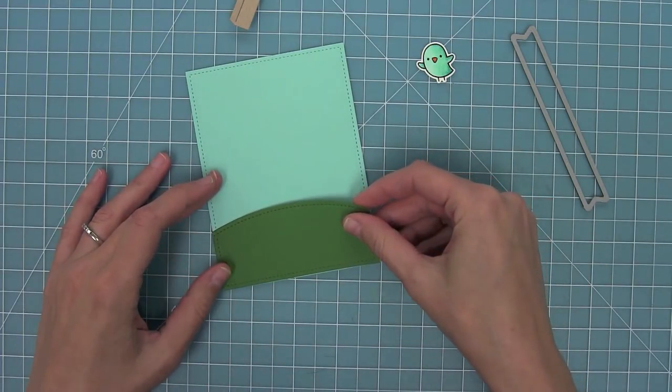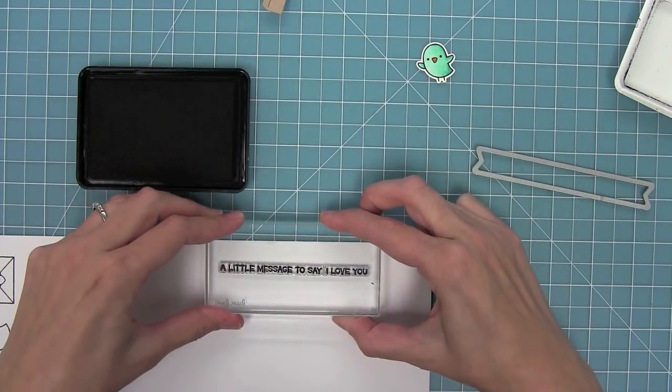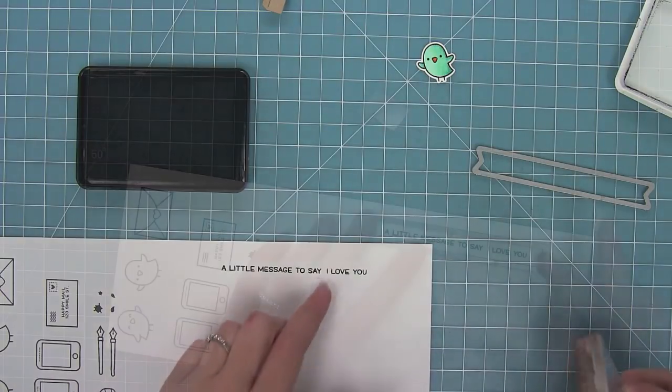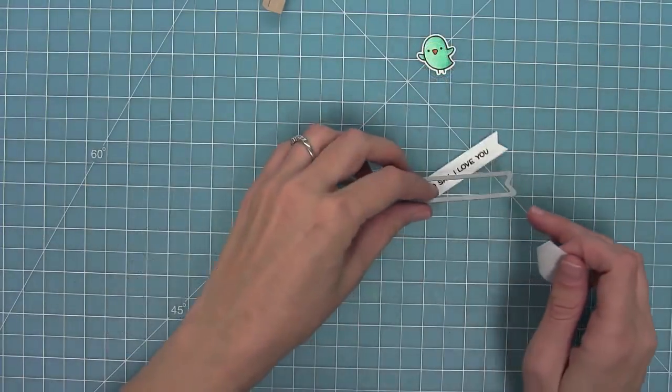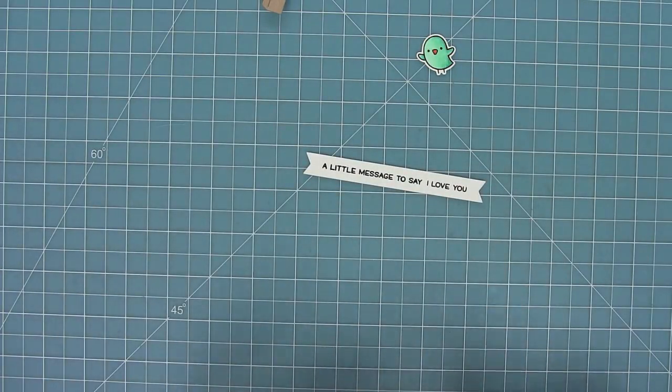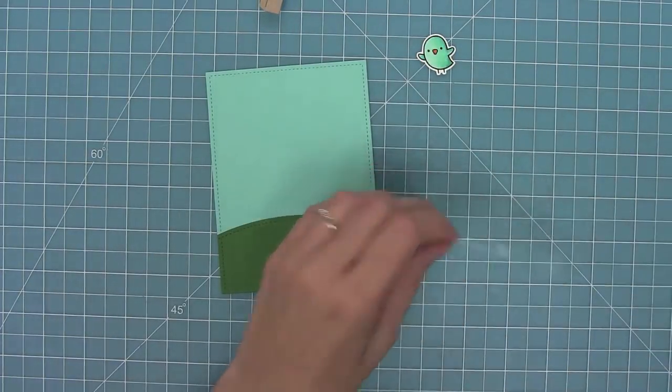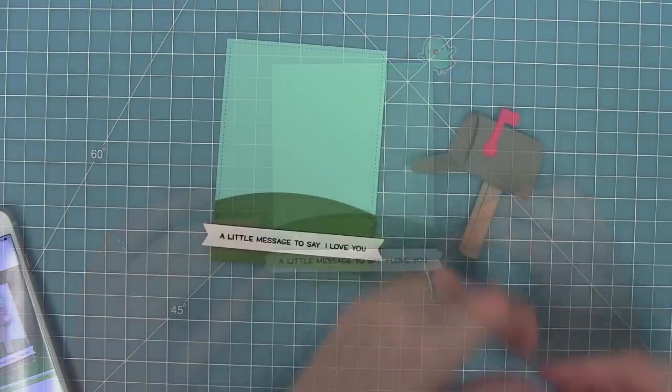Then I can go ahead and stamp my sentiment which is going to be a little message to say I love you that comes from the love letter stamp set. I'm going to use one of our everyday sentiment banner dies to cut that out. Then I can go ahead and add a bunch of foam tape to that and layer that on to the card.